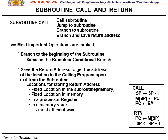Subroutine call and return: Instructions include Call Subroutine, Jump to Subroutine, Branch to Subroutine, Branch and Save Return Address. Key operations: branch to the beginning of the subroutine and save the return address to know where to return in the calling program. Return address storage options: fixed location in subroutine, fixed location in memory, processor register, or memory stack (most efficient). Call code: SP - 1 → SP, PC → M[SP], EA → PC. Return: M[SP] → PC, SP + 1 → SP.